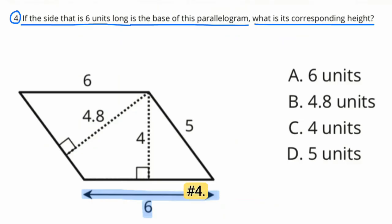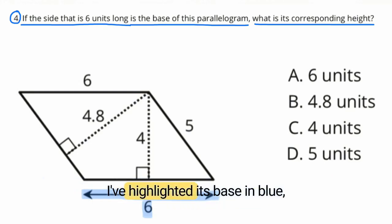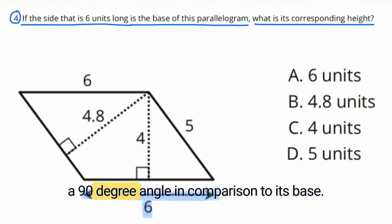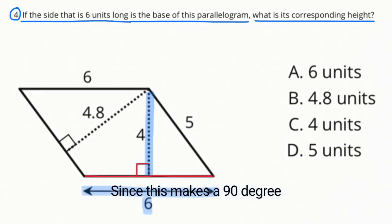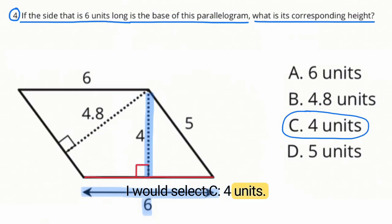Problem 4: If the side that is 6 units long is the base of this parallelogram, what is its corresponding height? I've highlighted the base in blue, and the corresponding height is going to be at a 90-degree angle in comparison to the base. Since this makes a 90-degree angle corresponding to the base, I would select C: 4 units.